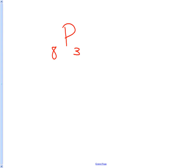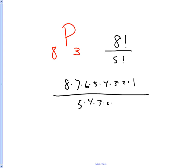No calculators. And what's 8 minus 3 factorial? 5 factorial. And did you see that a bunch of stuff is going to cancel? 8, 7, 6, 5, 4, 3, 2, 1 over 5, 4, 3, 2, 1. Cancels. Can you do the rest in your head? 8 times 7? 56 times 6.